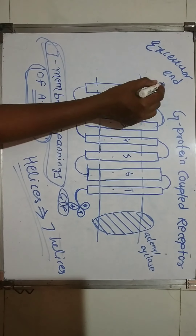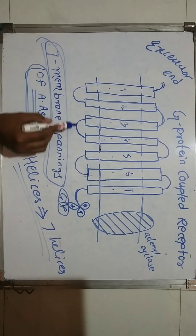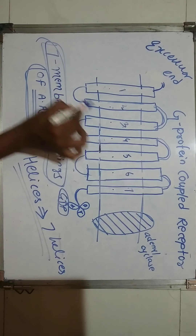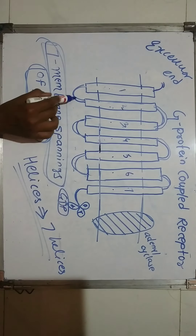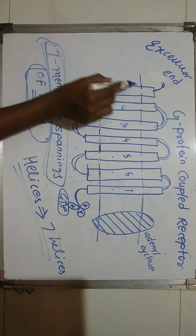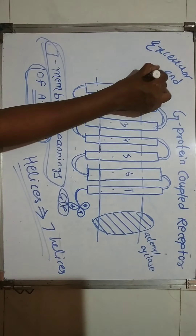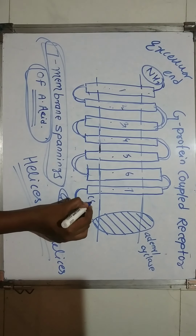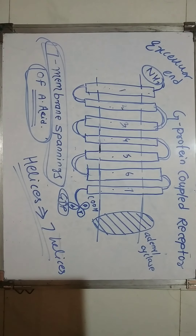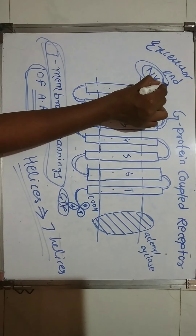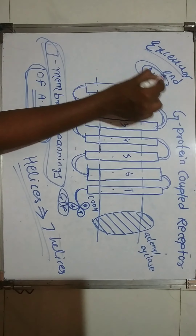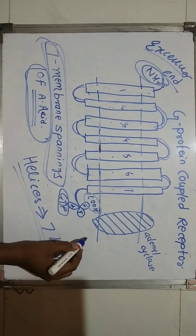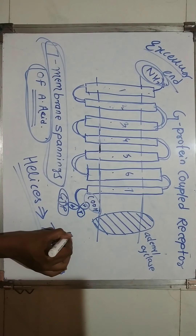These helices are situated such that they form three extracellular loops and three intracellular loops, as you can see here. Now, as this is an amino acid, it has one amino end — the NH2 end — and one carboxylic end — the COOH end. The NH2 end is situated outside the cell membrane, that is the extracellular end, and the carboxylic end is situated inside the cell membrane, that is the intracellular end.